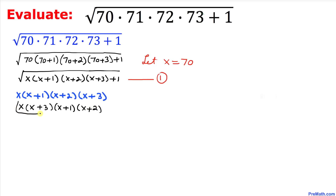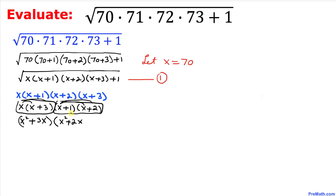Let's multiply the first pair: x times (x+3) gives us x²+3x. Now let's take care of the second pair using the FOIL method: (x+1) times (x+2) gives x²+2x+x+2, which simplifies to x²+3x+2.